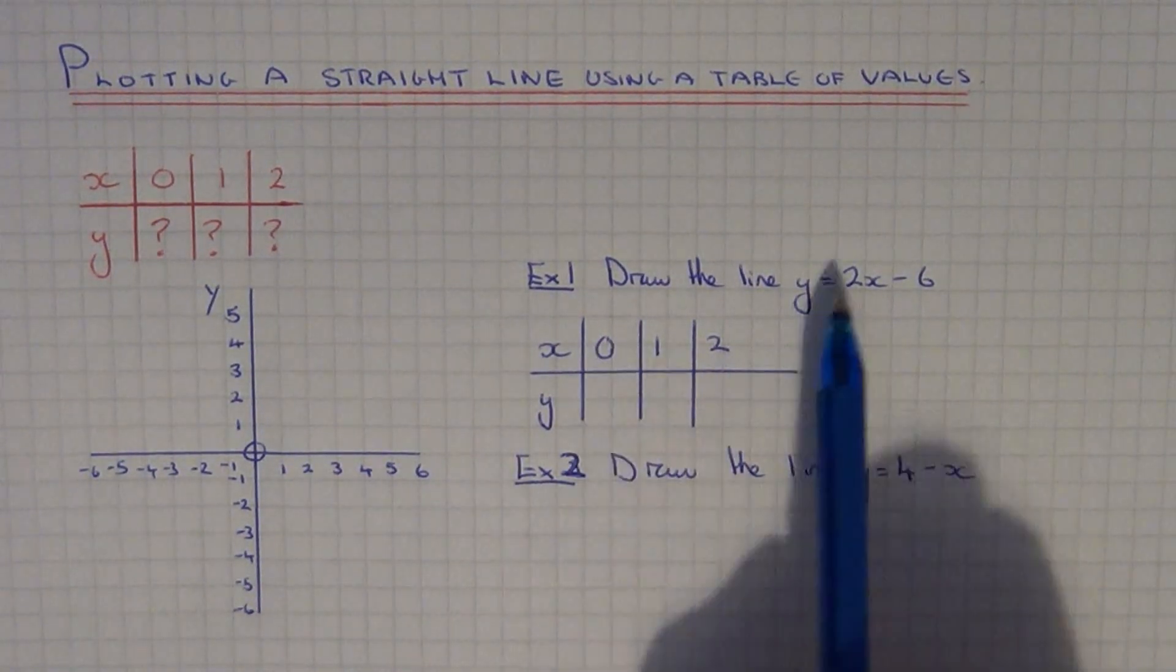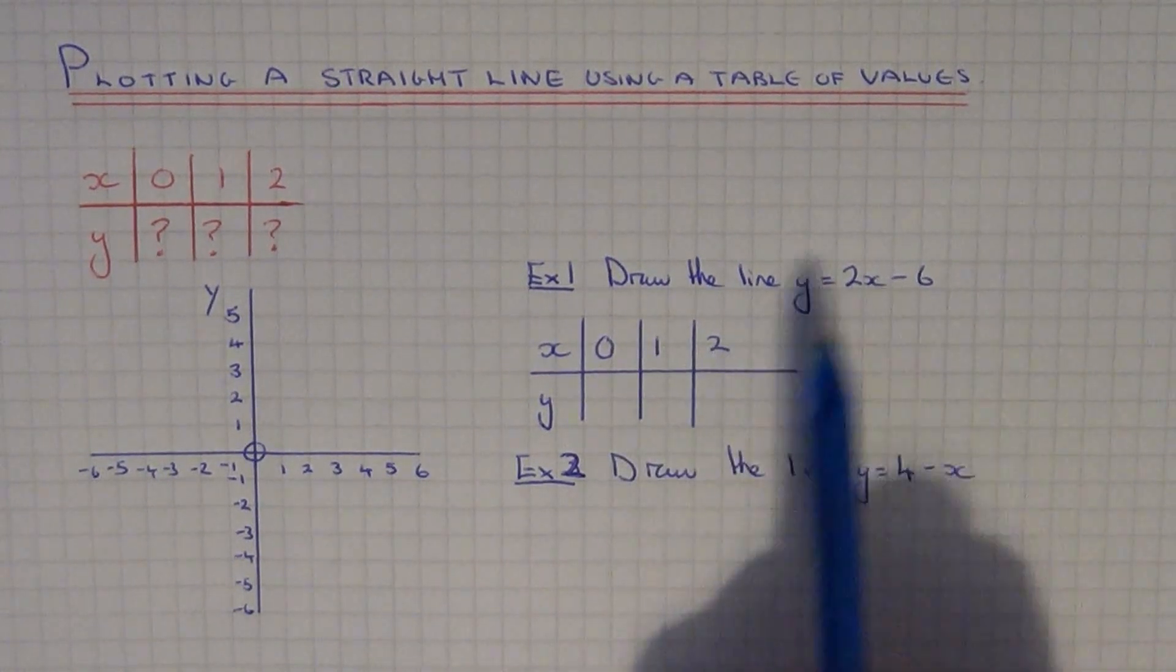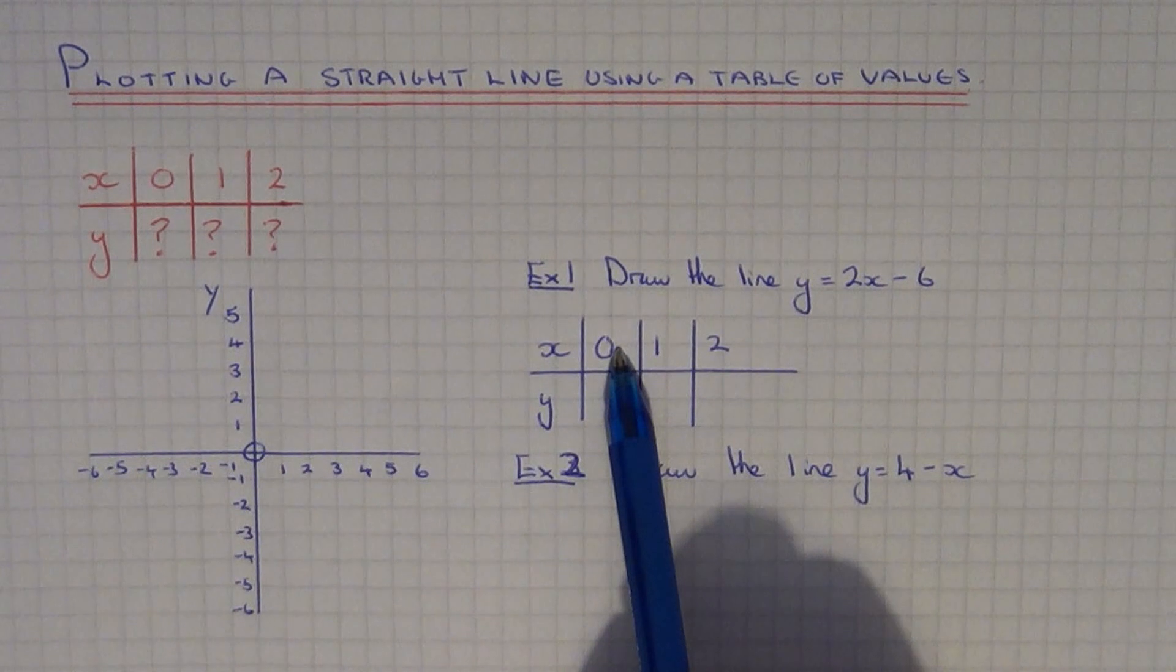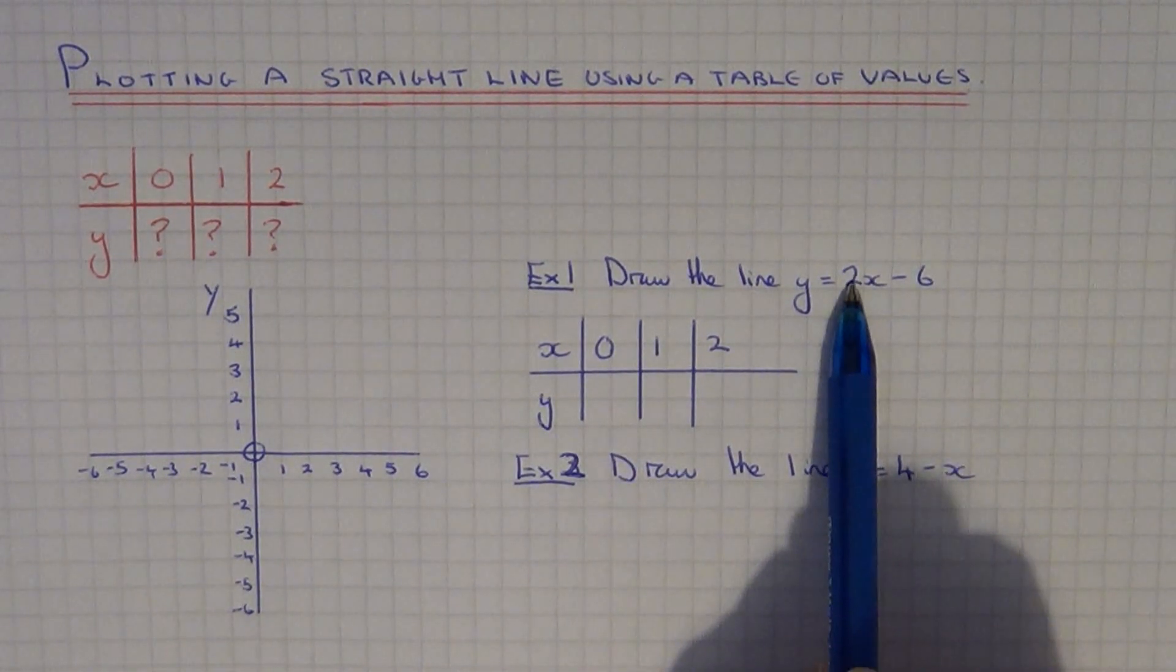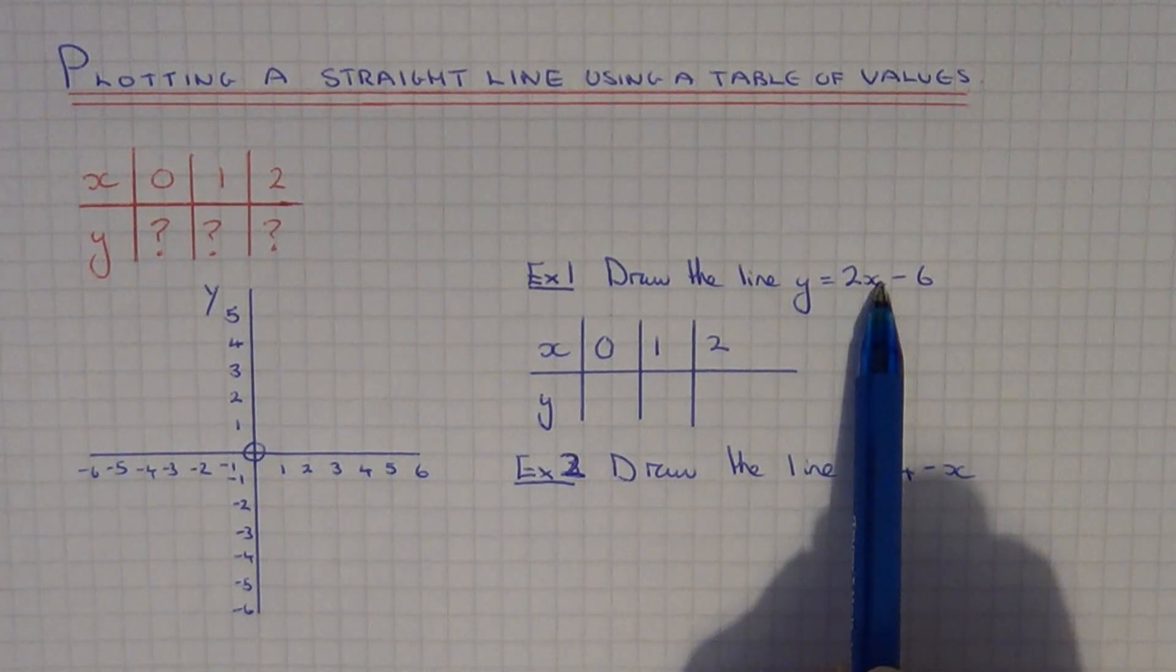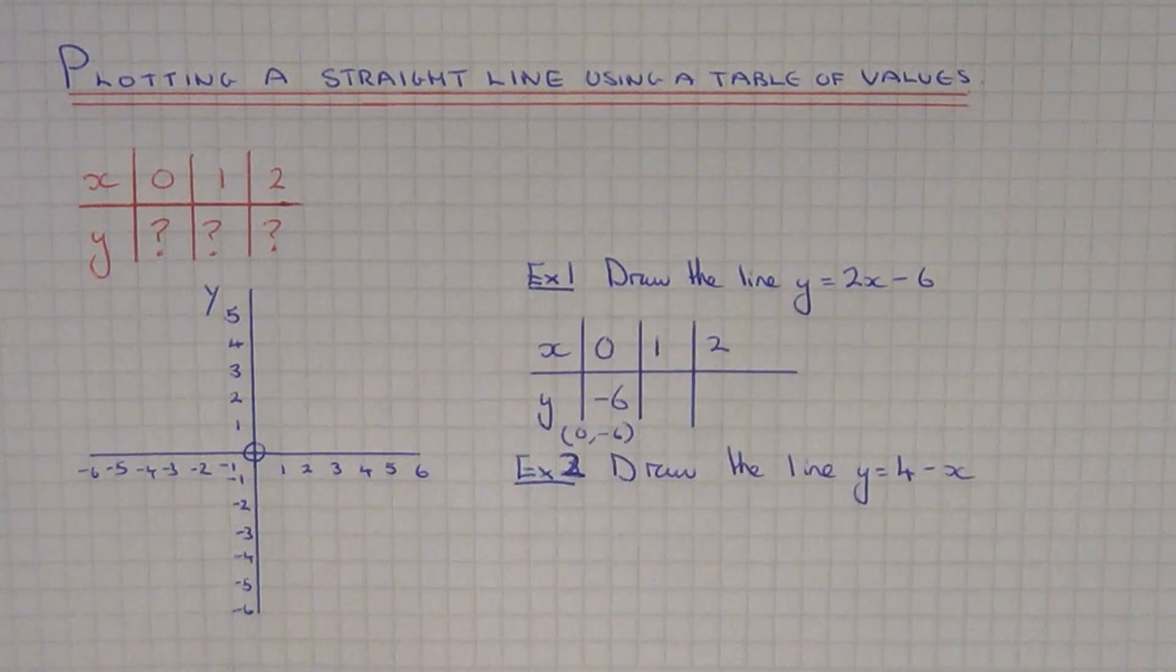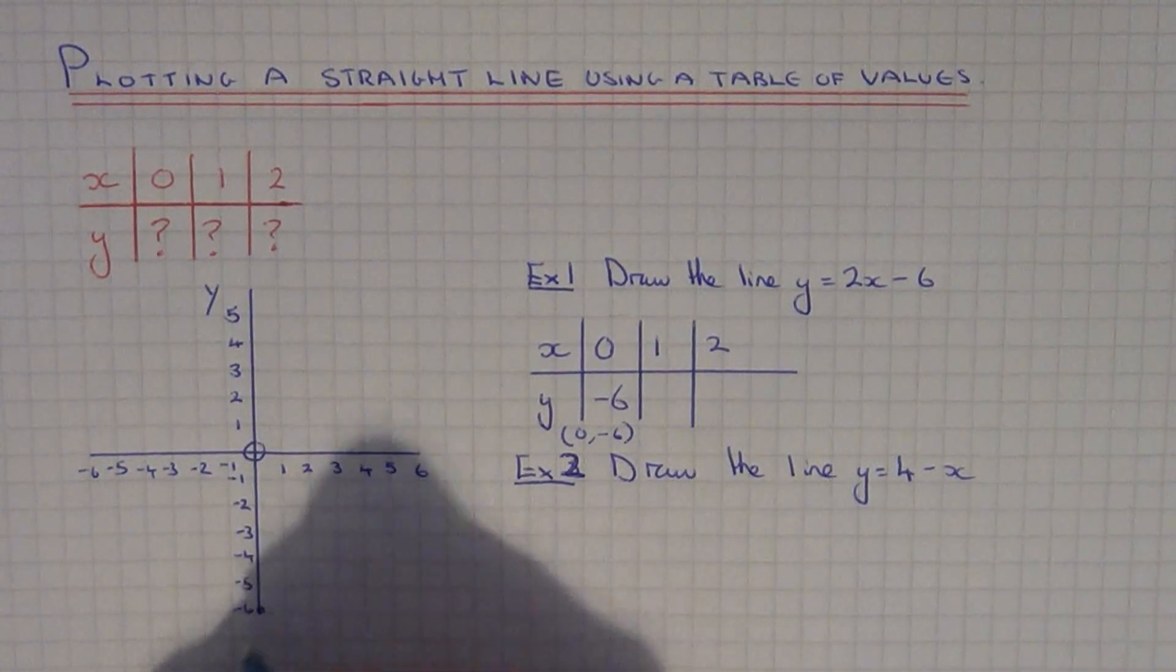To get the y-coordinates, all you need to do is substitute each x-coordinate into this equation to give you the value of y. So to get the value of y when x equals 0, just substitute 0. So we go 2 times 0 take away 6. 2 times 0 is 0, minus 6 is minus 6. So our first point which our line goes through is 0, minus 6. That would be here on our coordinate grid.